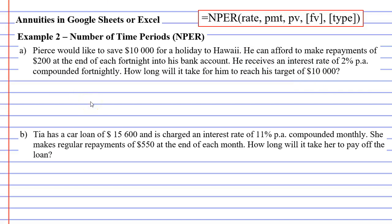This target is our future value FV. We're hoping that Pierce will have $10,000 in the future so he can go to Hawaii. We've also got an interest rate of 2% compounded fortnightly. To calculate R, we take 2 and divide it by 26 because there are 26 fortnights in a year. Whenever we calculate R, it has to be written as a decimal, so we also divide by 100. Rather than working this out now, Microsoft Excel and Google Sheets will calculate this for us.